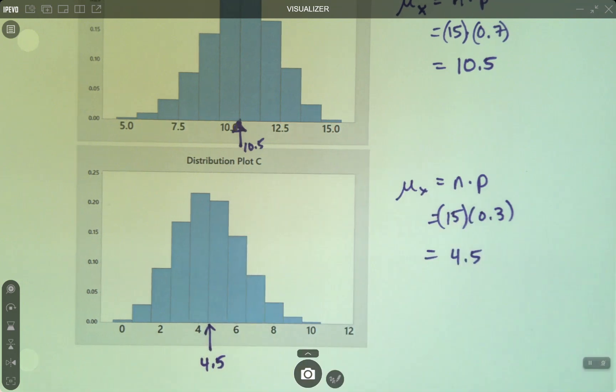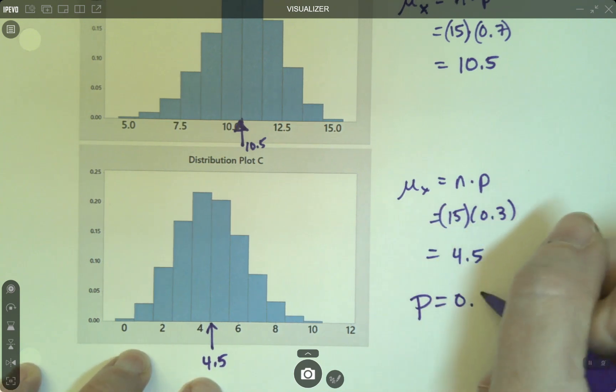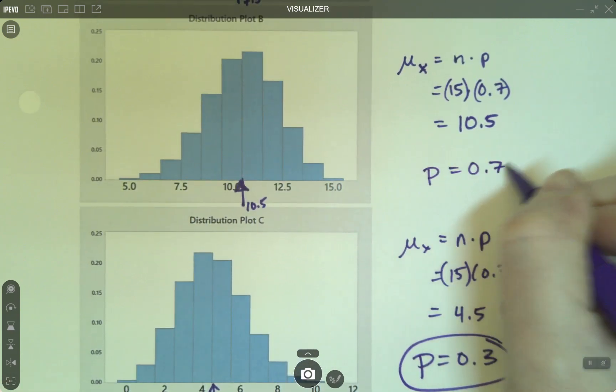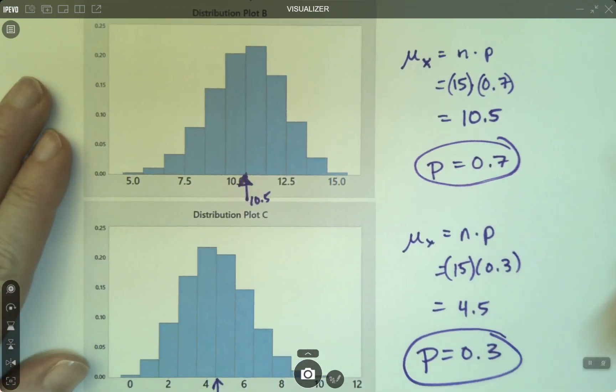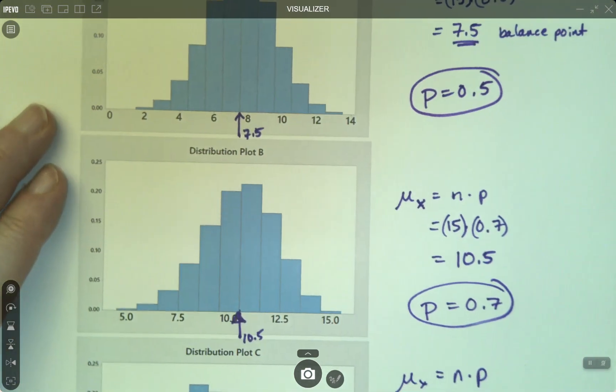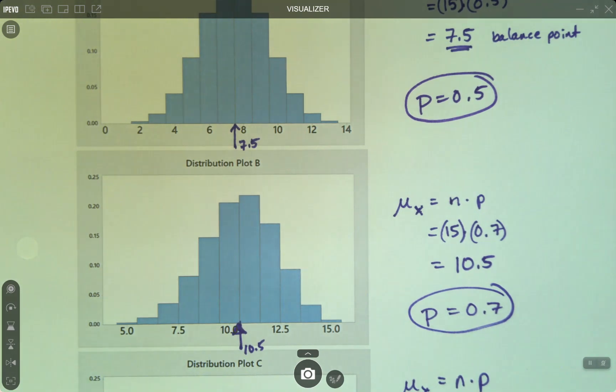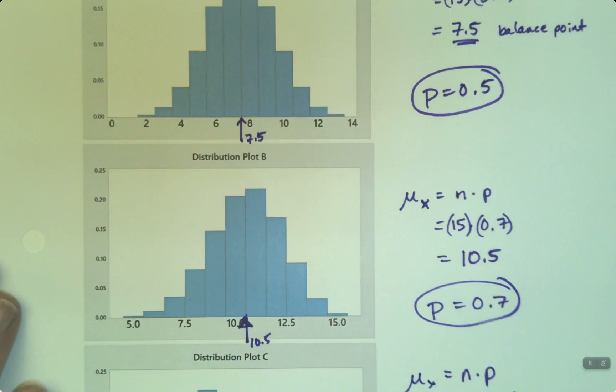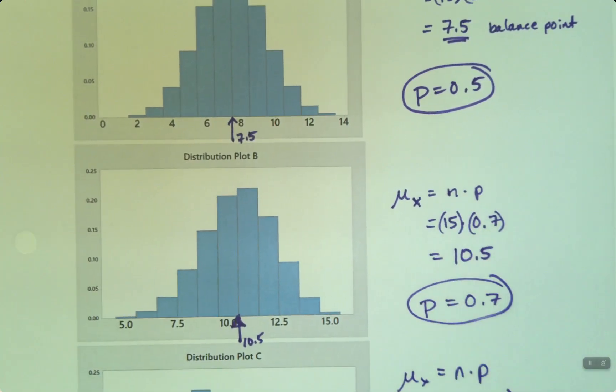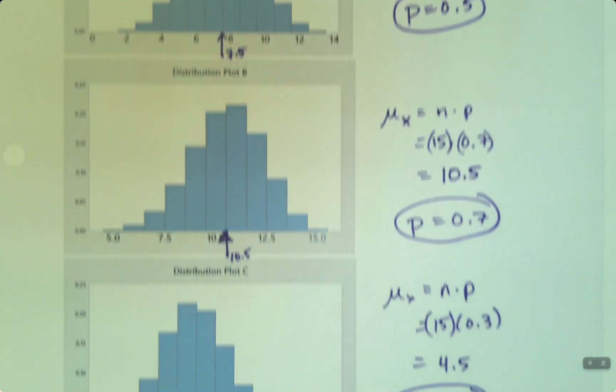So we haven't answered the question yet. So they wanted us to say which one is which. So this one is p equals 0.3, this one's p equals 0.7, and then the first one was p equals 0.5. Done. Just by using the fact that the mean is the balance point and the mean's a very easy calculation to make. You just multiply your number of trials times your probability of success and you're done. Easy as that.